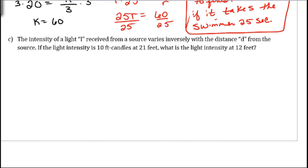And one more of these. The intensity of light I received from a source varies inversely, so we have I varies inversely. So we're going to have I is equal to some constant k divided by what they have listed next, which is the distance d.